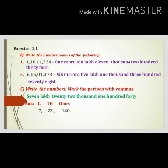Question number three: the given digits are 6,05,01,378. Mark the place value above the digits. Listen carefully — here the ten lakhs place is zero and the ten thousands place is also zero. So we write the number name in words: six crores, five lakhs, one thousand, three hundred and seventy-eight.